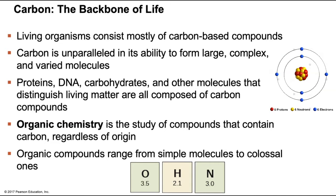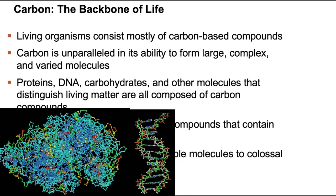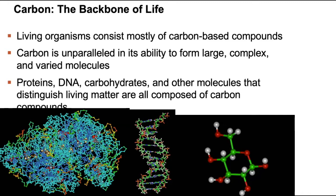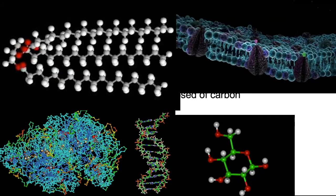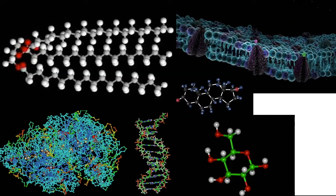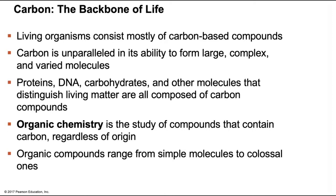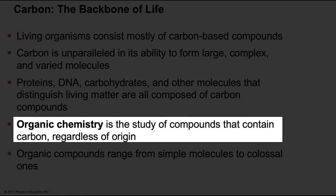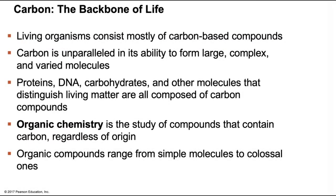Carbon is unparalleled in its ability to form large, complex, and varied molecules. All proteins, DNA, and carbohydrates are composed of carbon. Other examples include fatty acid chains that make up fats and cell membranes, steroid hormones like testosterone and estrogen, and carbon dioxide, which you release with each exhale. All of these compounds that contain carbon are called organic molecules. Organic compounds can range from simple molecules to colossal ones.